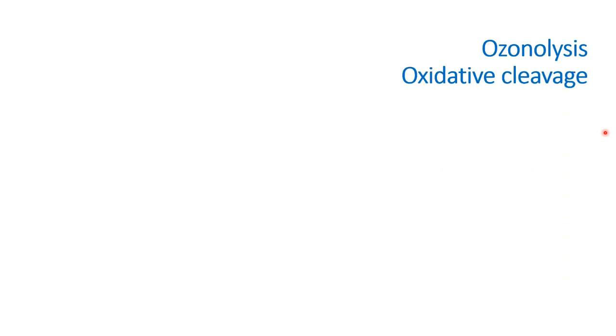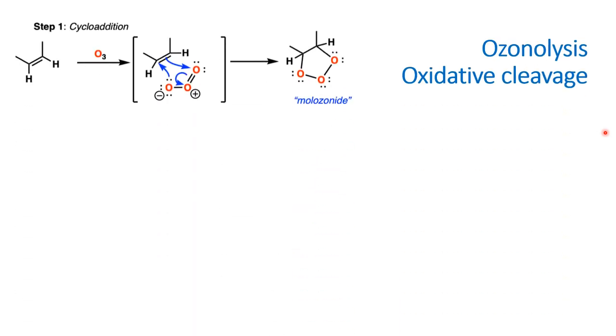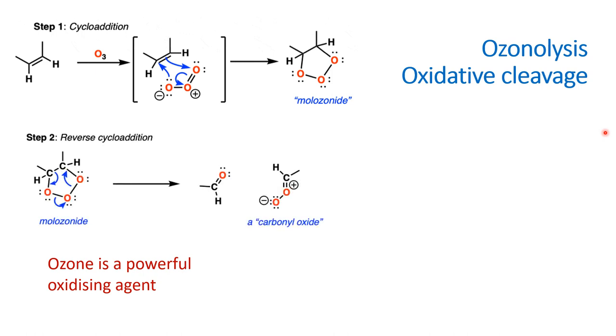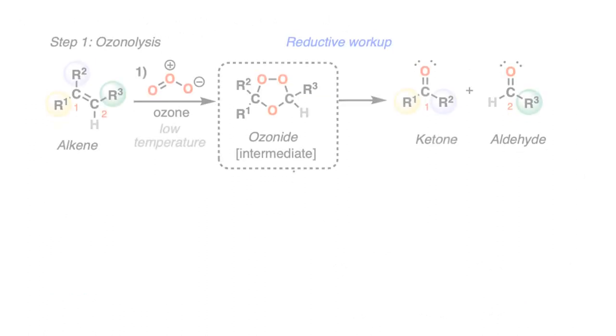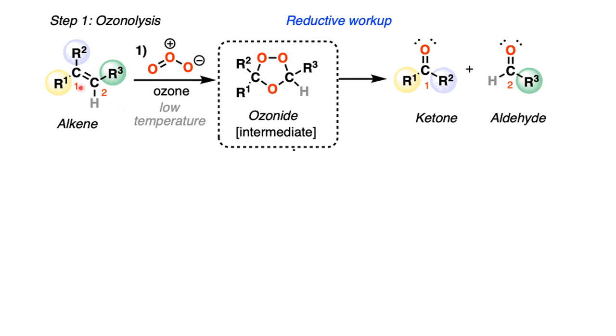In ozonolysis, ozone is a very strong oxidizing agent and this oxidizing agent can react with alkenes to form an unstable mol ozonoid, and this mol ozonoid rearranges to form a stabler ozonoid. This ozonoid is the compound which undergoes further reaction. The ozonoid that is formed is an intermediate in this reaction, and according to the reagent that is used after this, there are two types of workups that are possible.